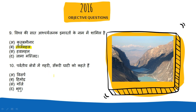Next question: Parvatiya kshetron mein gehri sakri ghati ko kehte hain. To jo iska sahi answer hai woh hai Gorge. Aab dekhiye yeh figure mein aap dekh sakte hain — yeh dekho, kaafi gehri ghati hai aur sakri bhi hai, matlab jo iska dhal hai woh tivra hai.